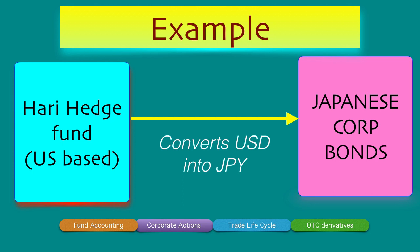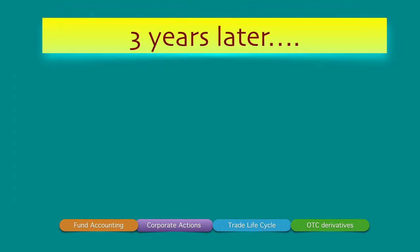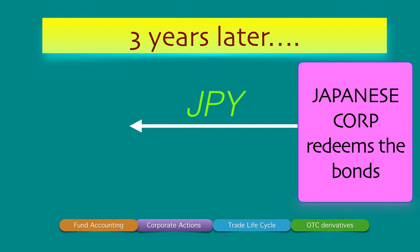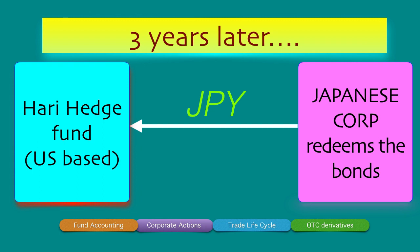Even though Hari Hedge Fund has dollars, they don't directly invest dollars into Japanese corporate bonds — they convert USD into JPY and then make the investment. Now, three years later on redemption, the Japanese corporation redeems the bonds and returns the investment to Hari Hedge Fund. But in which currency? It returns the investment in JPY, because that's the currency it received. So Hari Hedge Fund is going to receive JPY.